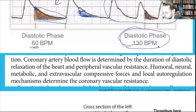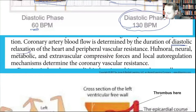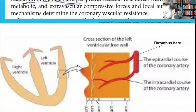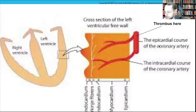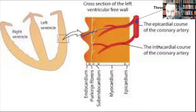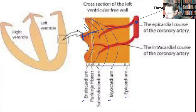Coronary blood flow is determined by the duration of diastolic relaxation. If there is thrombus formation in a vessel going through the wall, it creates a transmural MI — going through all layers: endocardium, myocardium, epicardium. This area becomes necrotic first and then the necrosis expands.